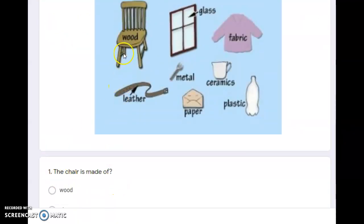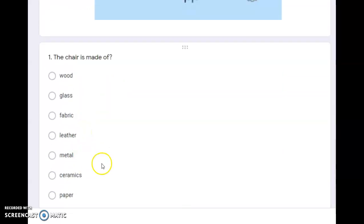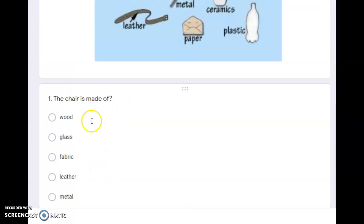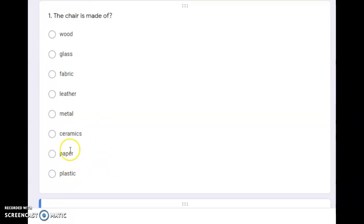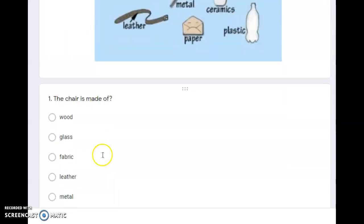Sometimes there will be a lot of words, sometimes there's only three options for you to choose. The chair is made of - very obvious, so this chair is made of wood. You're just going to select the word wood.